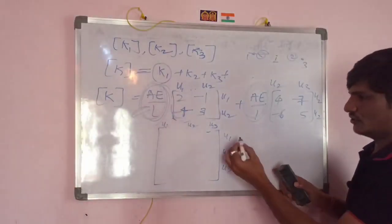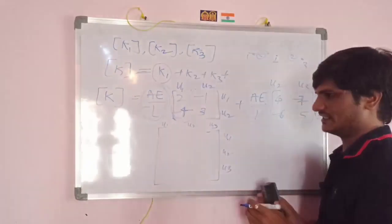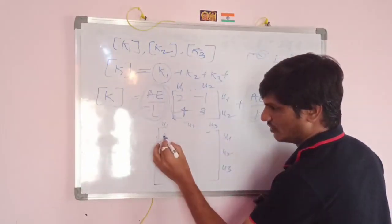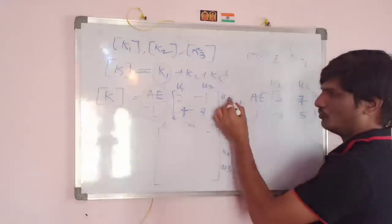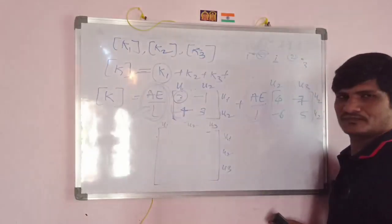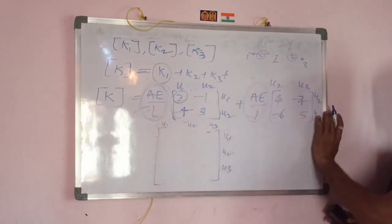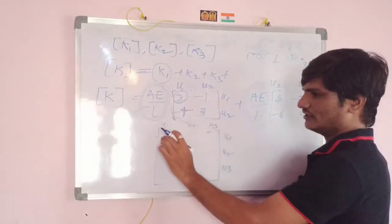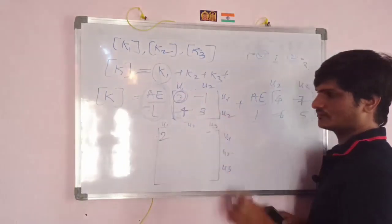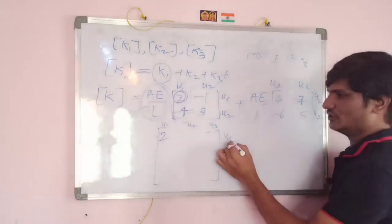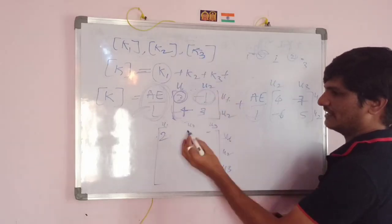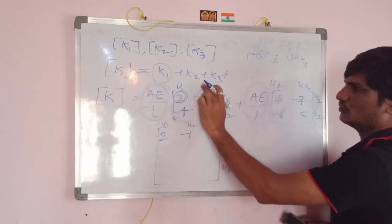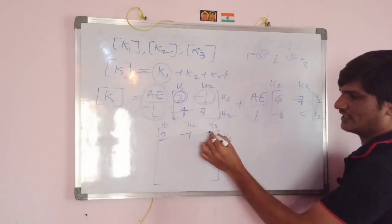For the first row, first column position (u1, u1): look at both element stiffness matrices for any u1-u1 term. From element one it is 2; element two has no u1, so add nothing — result is 2. For position (u1, u2): the value is minus 1. For position (u1, u3): there is no link between u1 and u3, so that value is zero.